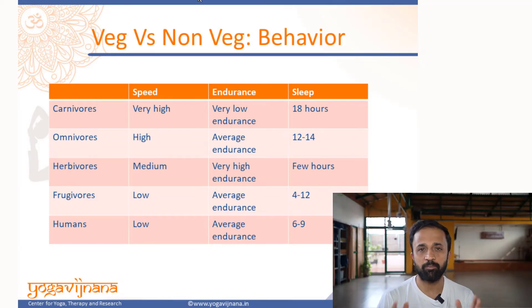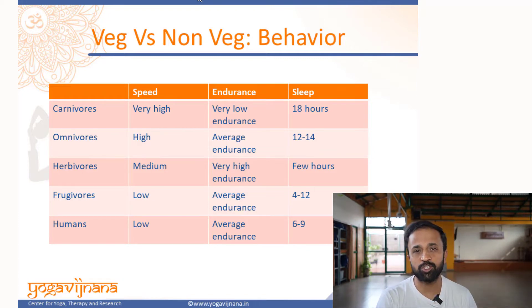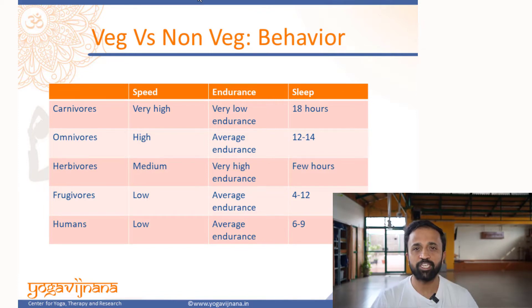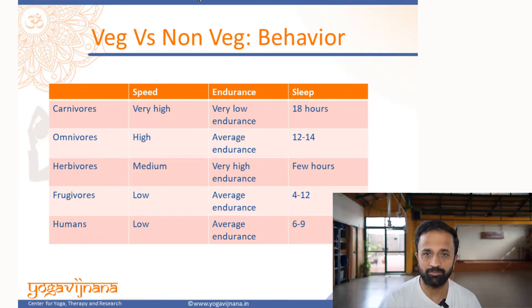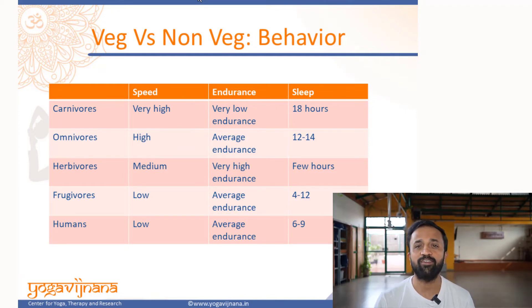The first is behavior itself. Here I am comparing the behavior of different species: carnivores which mainly eat meat, omnivores which eat both meat and plant-based diet, herbivores mainly on plants, and a special category — frugivores which mainly survive on fruits — and also humans. If you look at the speed of different species, carnivores are wild animals that have to hunt and run fast, so they have very high speeds. Whereas humans or frugivores just pick fruits from plants or trees, so they do not have to run anywhere to find food — that is why their running speeds are low.